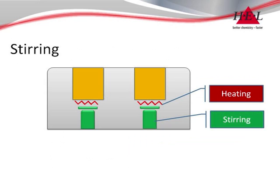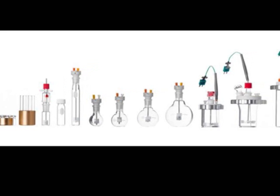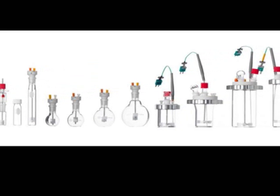The powerful stirrer motor is located directly underneath each reactor position and couples with magnetic fleas or suspended magnetic stirrers inside the reactor. Magnetic fleas are adequate for simple operations in smaller vessels.